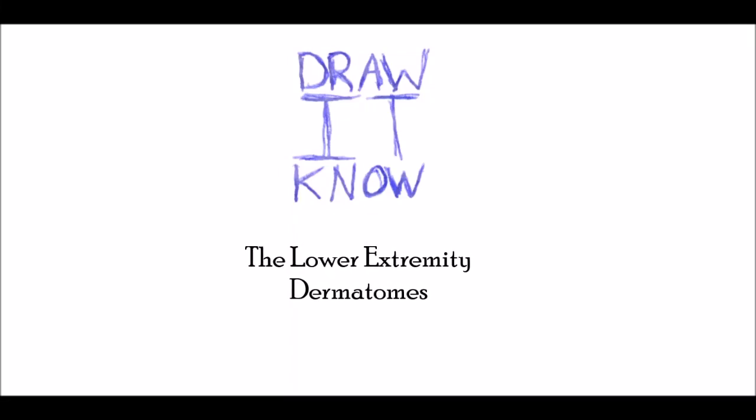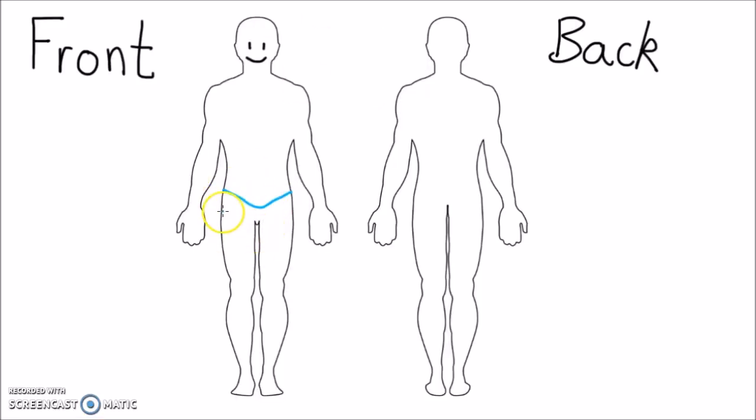This is the fourth and final video in the four video series on dermatomes, or the area of skin supplied by nerves from a single spinal root. The previous video focused on thoracic dermatomes, and this video will focus on the lumbar and sacral dermatomes.